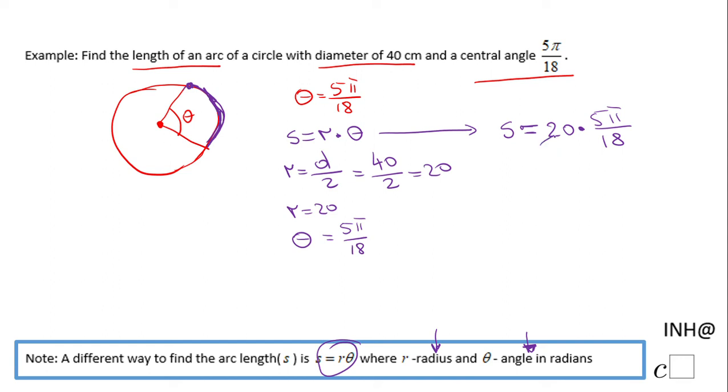20 and 18 are both divisible by 2, so we can divide by 2. This becomes 10, and 18 divided by 2 is 9. Then we have 10 times 5, which is 50. So we get 50π/9, and this is the length. Let's put centimeters here since the diameter is in centimeters.